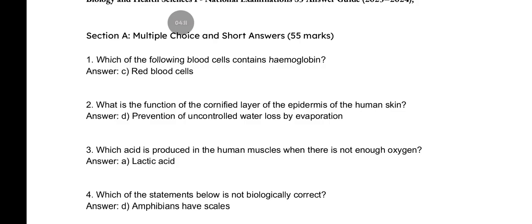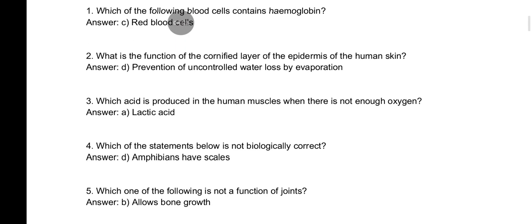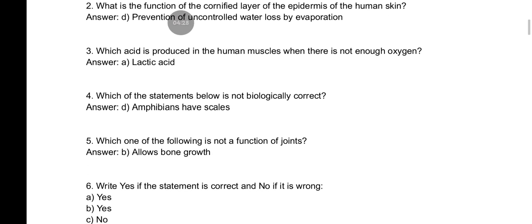Here are the corrections. Section A: multiple choice and short answers. We are asked which of the following blood cells contain hemoglobin — among the options, you have to choose red blood cells. For the function of the cornified layer of the epidermis of the human skin, the answer is D: prevention of uncontrolled water loss by evaporation.